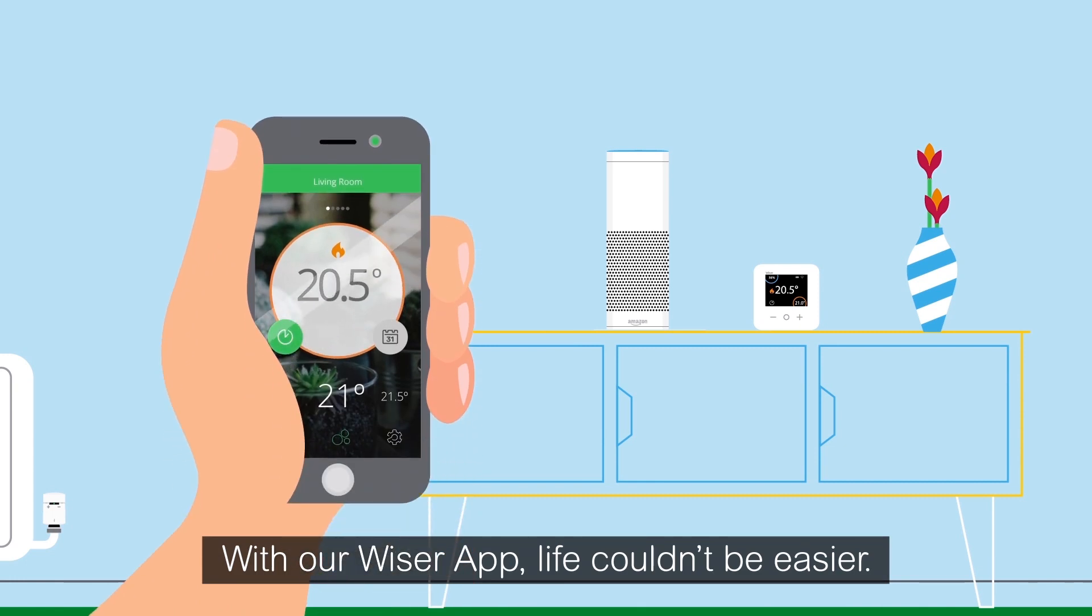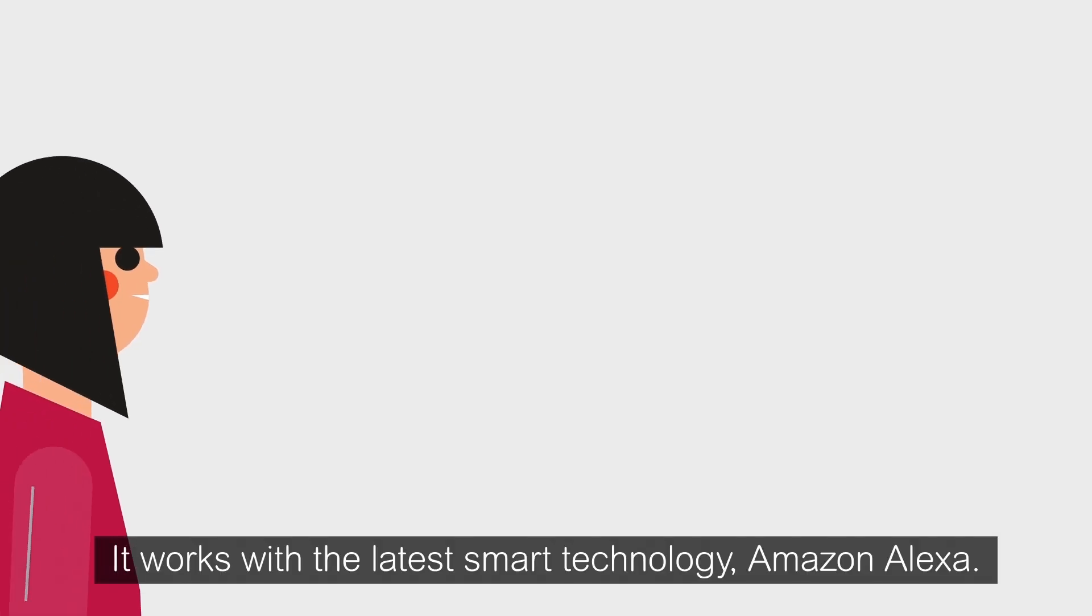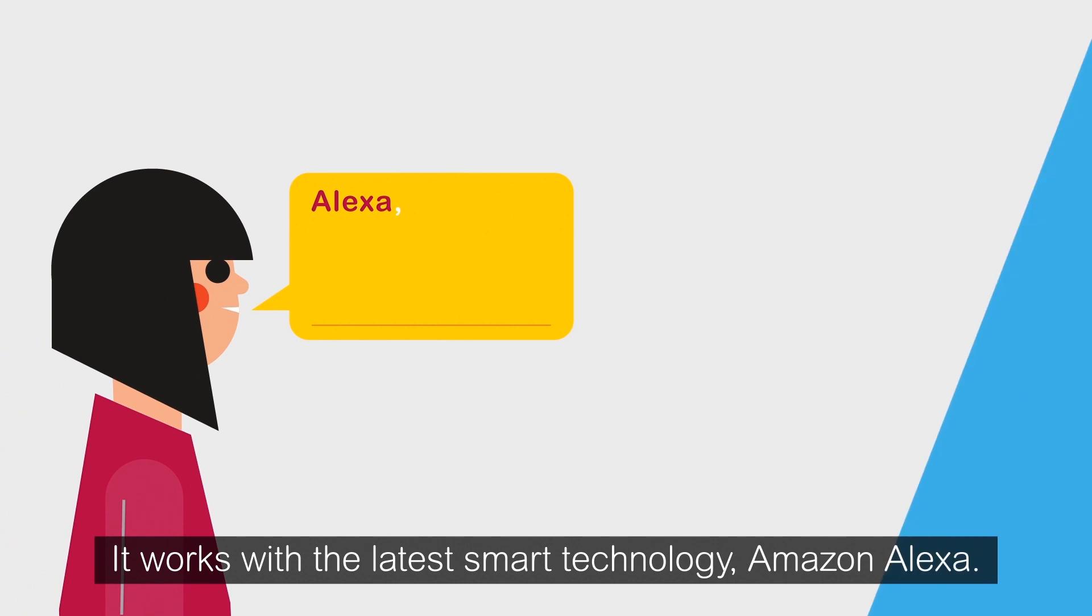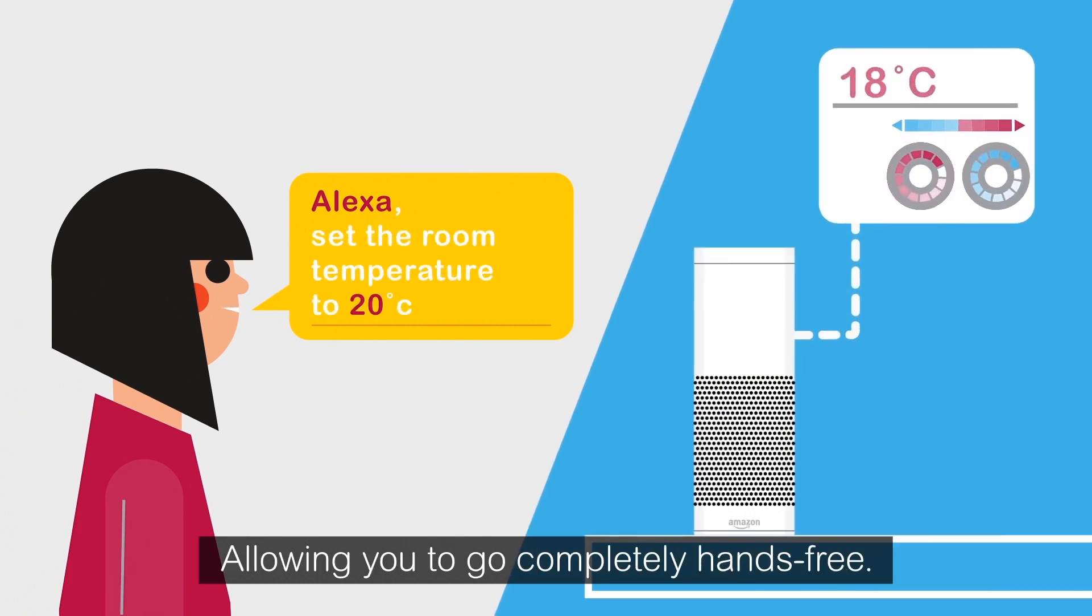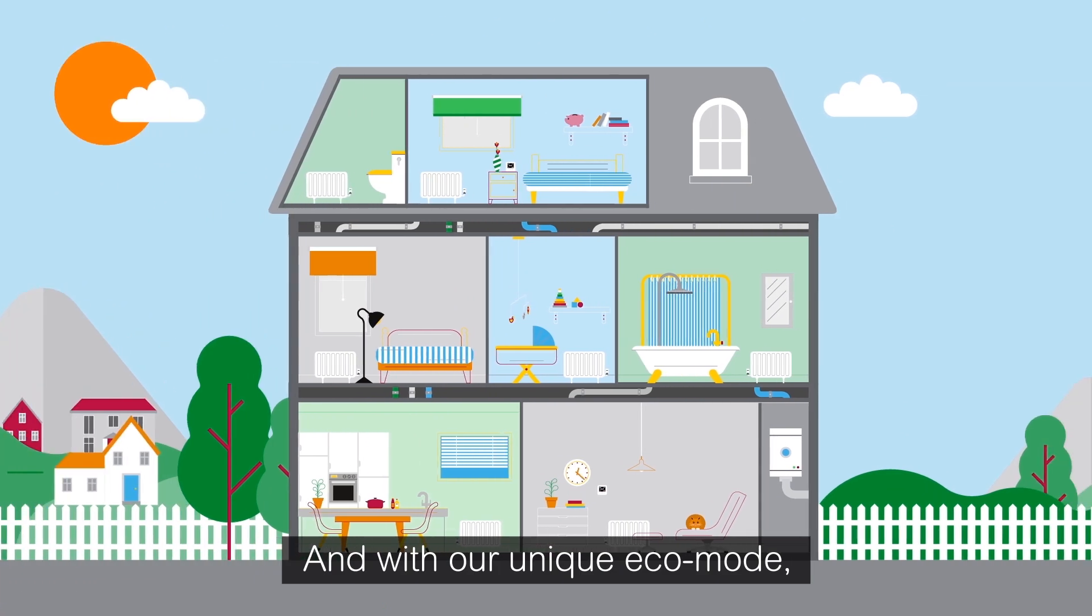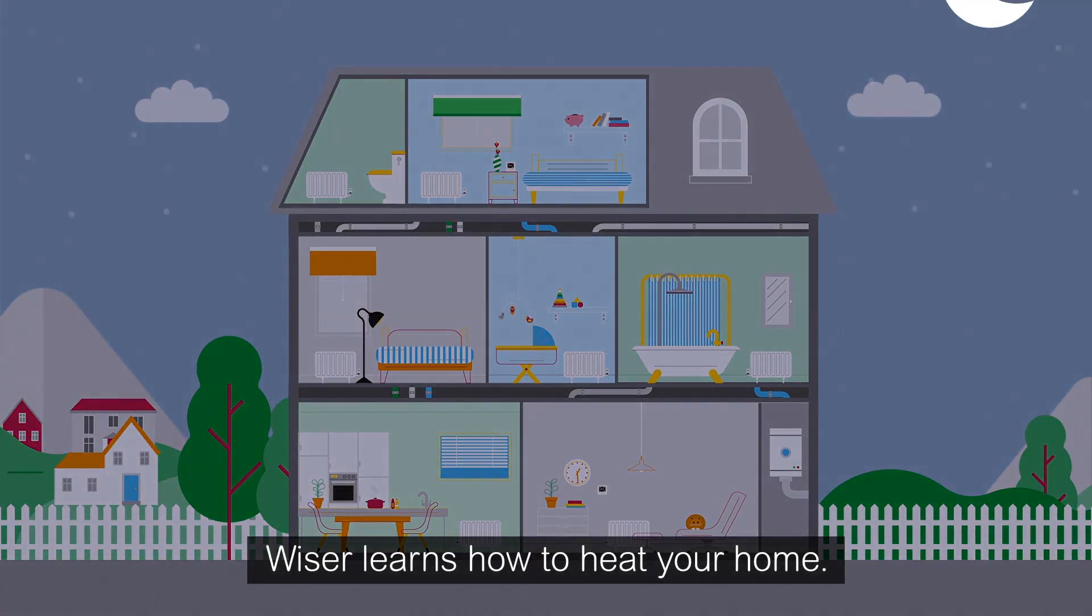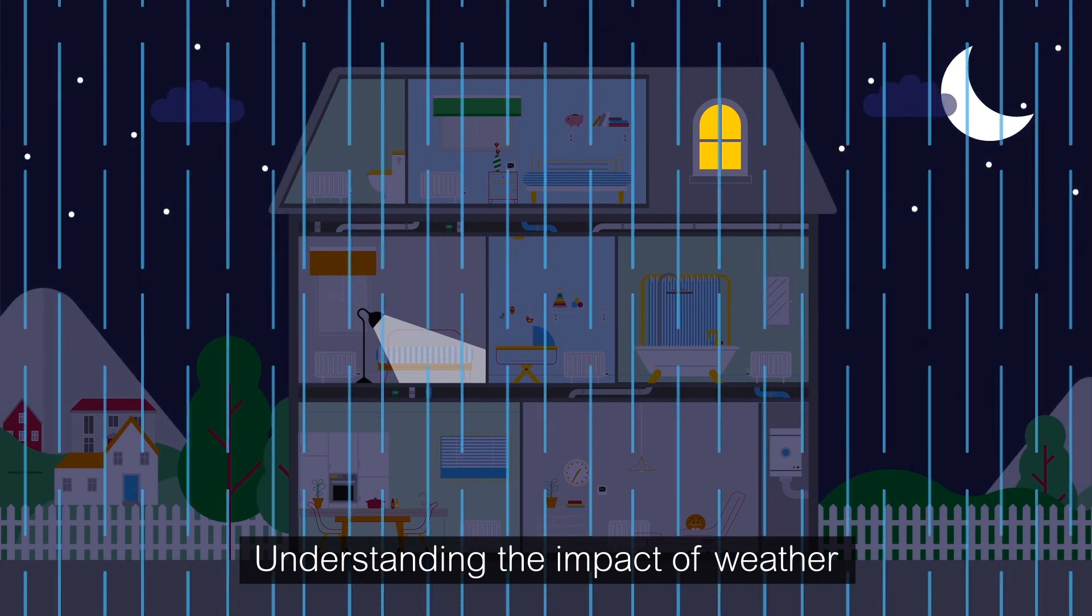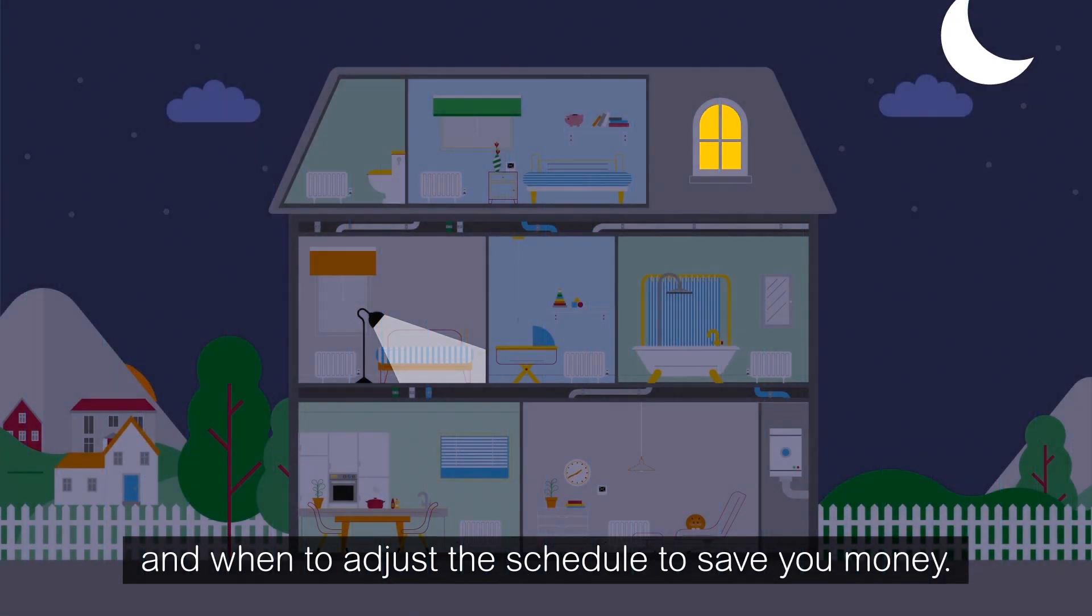With our Wiser app, life couldn't be easier. It works with the latest smart technology, Amazon Alexa, allowing you to go completely hands-free. And with our unique eco mode, Wiser learns how to heat your home, understanding the impact of weather and when to adjust the schedule to save you money.